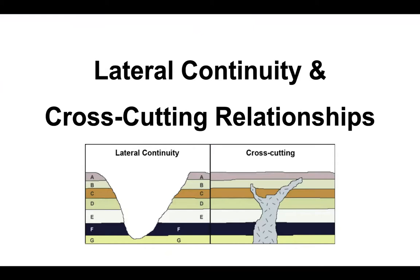As a result, rocks that are otherwise similar but now separated by a valley or other erosional features will still match up and be assumed to be originally continuous. We're going to take a trip through the Southwest part of the United States. You can find examples of these geological forms all over the world, but we have excellent places to visit in the Southwest because there's very little vegetation to conceal those formations.